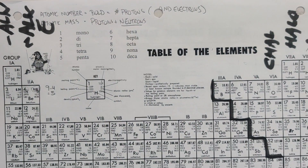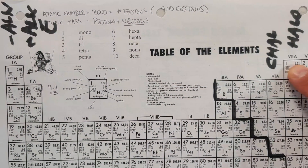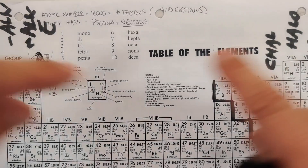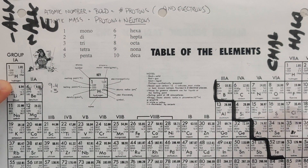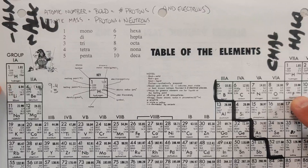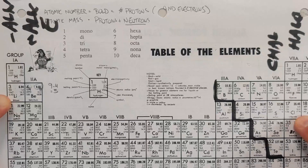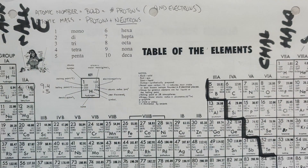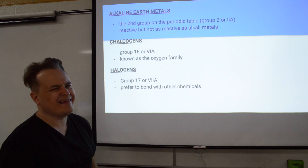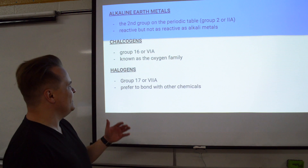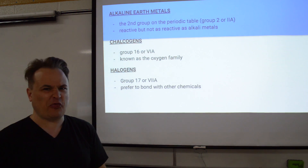Think about it: the halogen family needs one electron and the alkali metals only have one in their outer shell — if they want to react, guess who would be very good friends. Fluorine and lithium could be really good friends. Chlorine and sodium — those groups are going to want to bond together equally. We'll get into that in a couple of lessons.